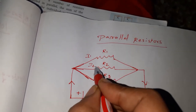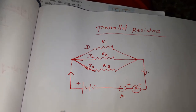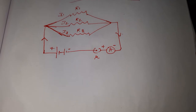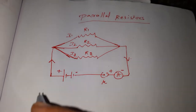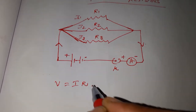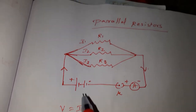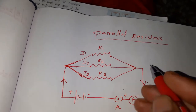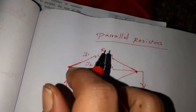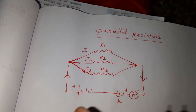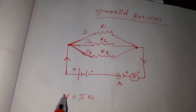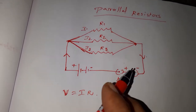The currents are I1, I2, and I3. According to Ohm's law, we know that V is equal to IR. Here V is common because the potential drop is between these two points only — not some other points, only these two points. In a single loop, the voltage drop varies at different points, but here the voltage drop is the same, flowing between the two points.